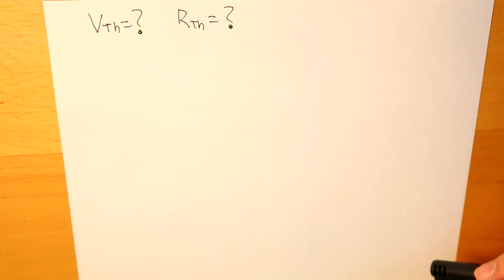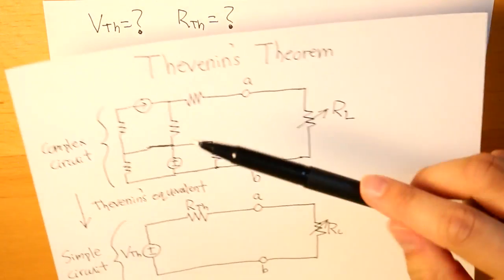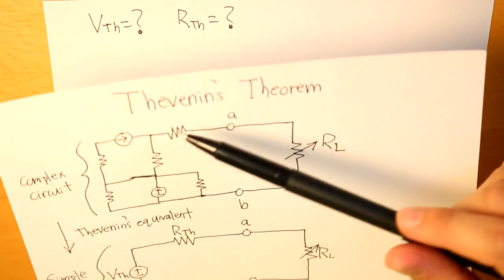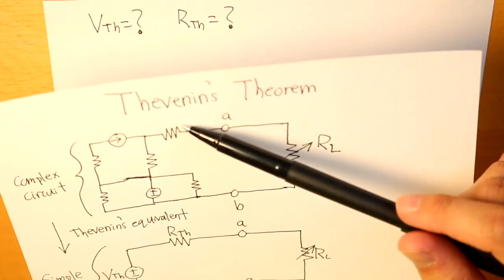So going back to our first page, we have this circuit and using this circuit we can find what VTH and RTH is.